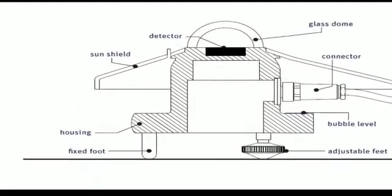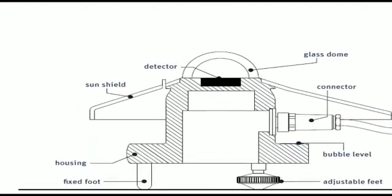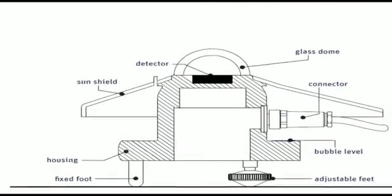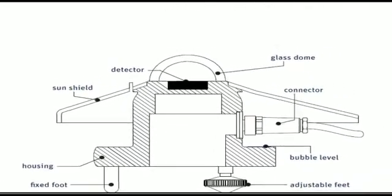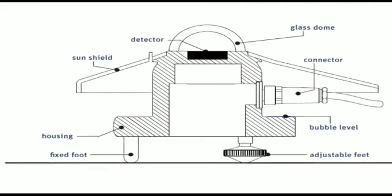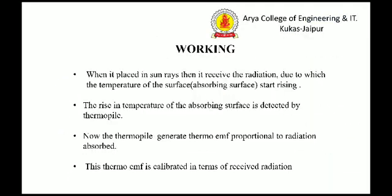This is the construction of the pyranometer. We can see its parts: a sun shield, a detector, a glass dome, a connector, a bubble level, a fixed foot, and housing. When placed in the sun's rays, it receives radiation, causing the temperature of the absorbing surface to rise. This rise in temperature is detected by a thermocoil, which generates a thermo-EMF proportional to the radiation absorbed. This thermo-EMF is calibrated in terms of received radiation.